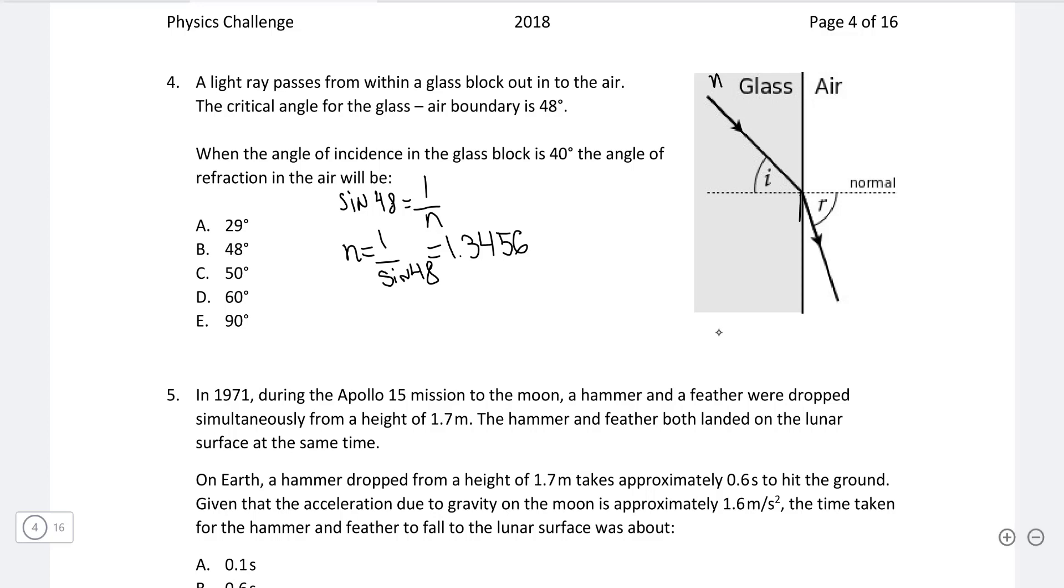Now to figure out the angle of refraction, we need to use Snell's Law. So we're going to say that N1 sine theta 1 is equal to N2 sine of theta 2. So N1 is the refractive index of glass, which is just 1.3456. N2 is the refractive index of air. That is defined to be just 1 in physics. And we know that theta 1 is going to be 40 degrees.